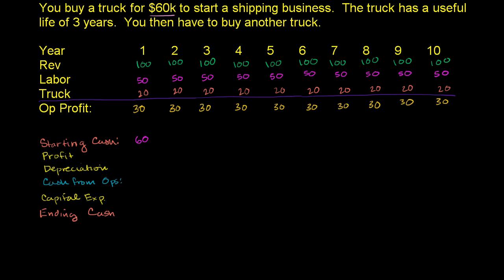Let's see if we can better understand what a cash flow statement for my simplified shipping truck example company would actually look like. I say it's simplified because this is a very simplified income statement for each of these periods — I'm not really showing all of the expenses and details you'd actually have for a shipping company. But we really just care about the accounting. So at the beginning of this fiscal year, when I started this company, I had $60,000, which we used to buy a $60,000 truck.